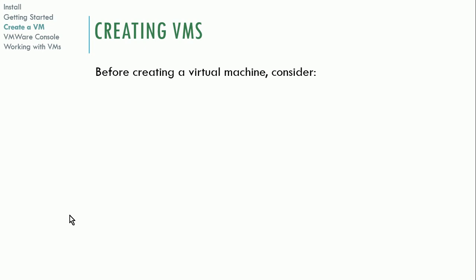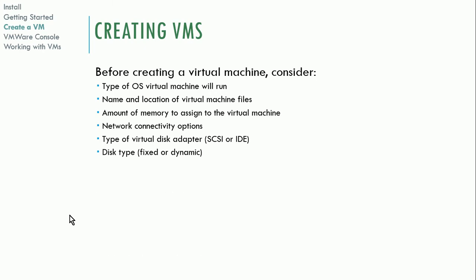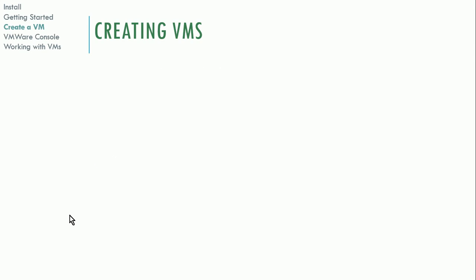Before creating a virtual machine, you'll want to decide what operating system it will run — in the lab we're going to use a Linux VM. You'll also need to plan the name and location of virtual machine files, the amount of memory to assign, which network connectivity option to use, the type of virtual disk adapter (SCSI or IDE), whether the disk is fixed or dynamic, and the maximum disk size.